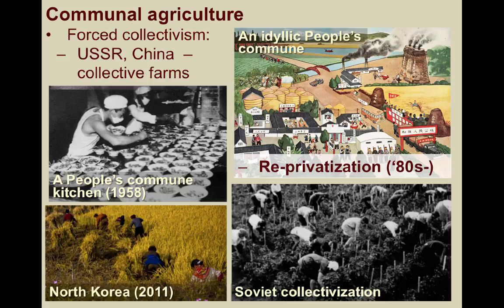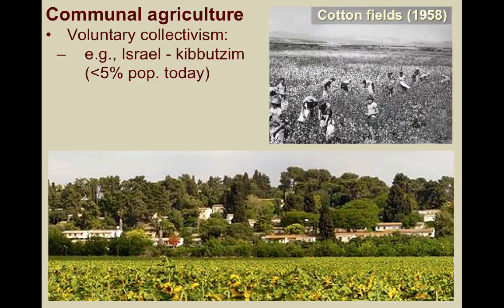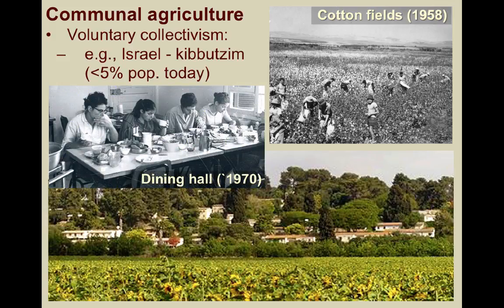What is less common is voluntary collectivism — for instance, the kibbutzim in Israel, which are collective communities traditionally based on agriculture. Kibbutzim began as utopian socialist communities. However, in recent decades, some kibbutzim have become more privatized. Comprising just under 5% of the population today, farming on these communes has been partially supplanted by other economic activities, including industrial plants and high-tech enterprises.